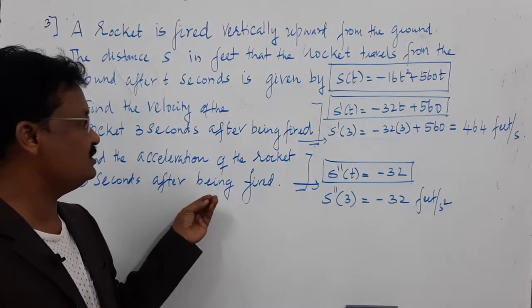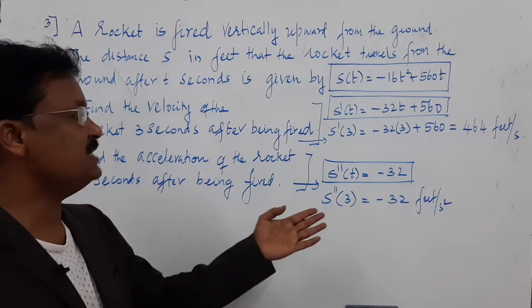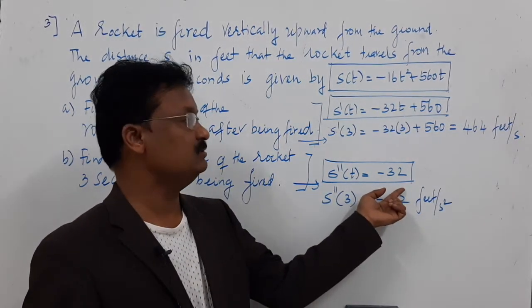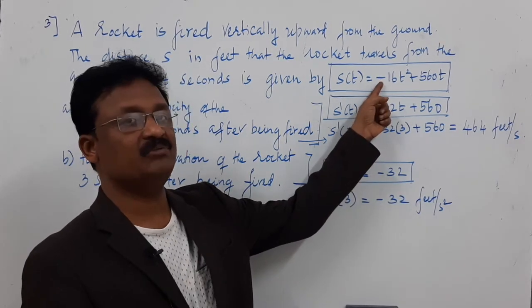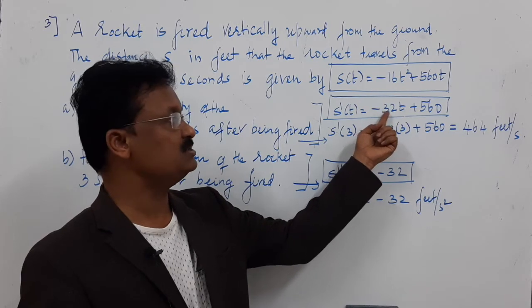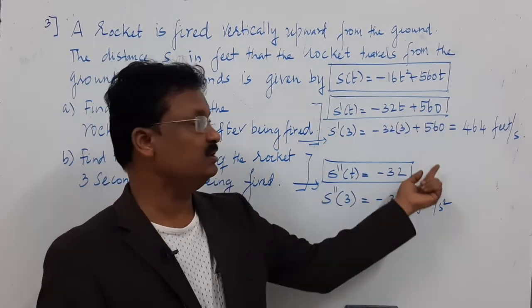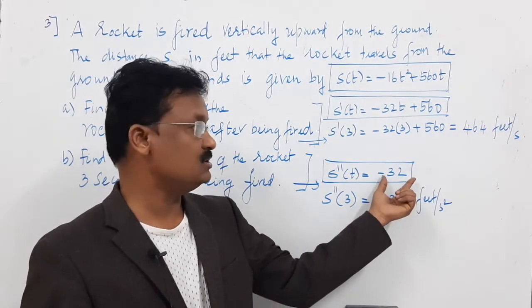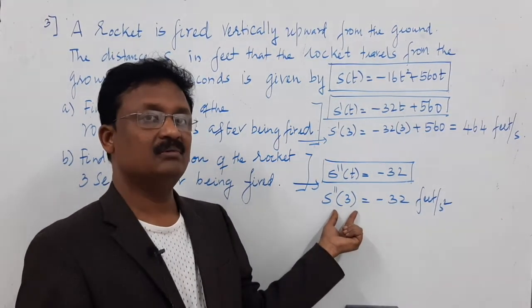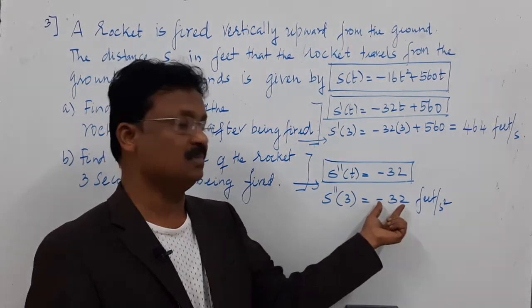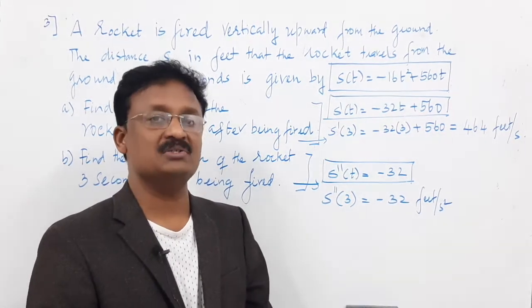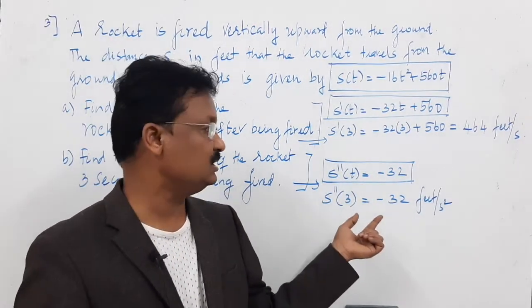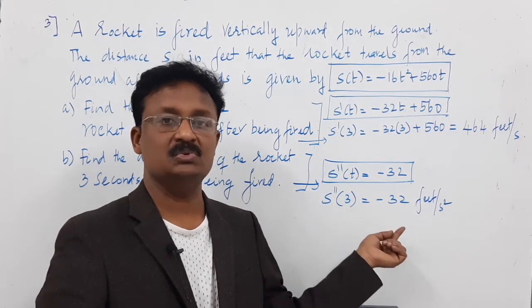Now find the acceleration of the rocket after 3 seconds. The second derivative s double dash of t: differentiating −32t + 560 gives −32 (a constant). So the acceleration is a constant −32 feet per second squared throughout the motion — at 3 seconds it is also −32 feet per second squared.